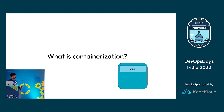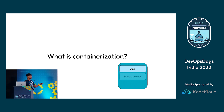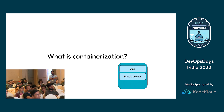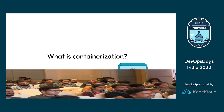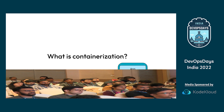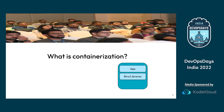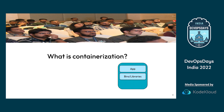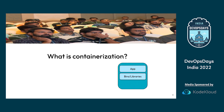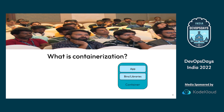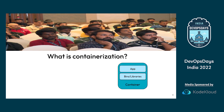For example, we have our app which we need to run in isolation, and this app has certain dependencies — libraries and all. So what we do is we package the application along with all its dependencies to run it in an isolated environment, and that is what a container is.